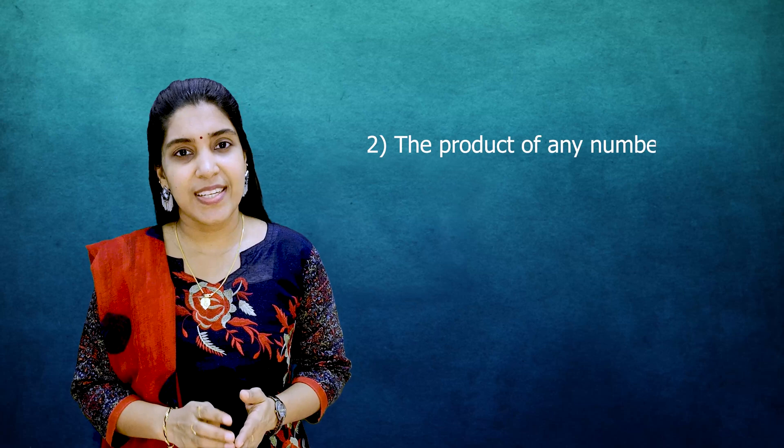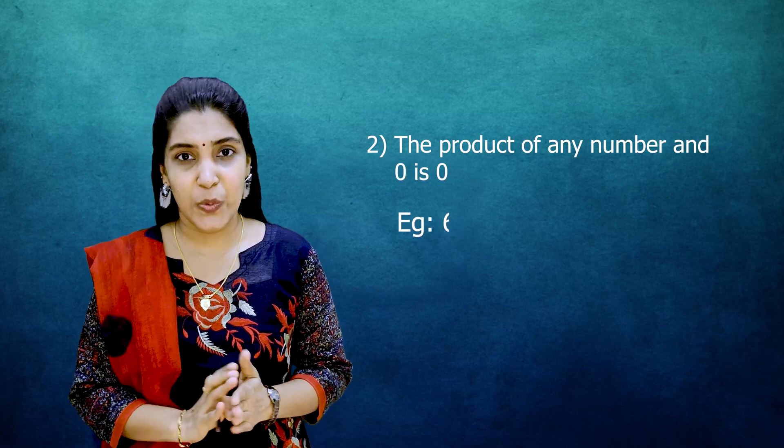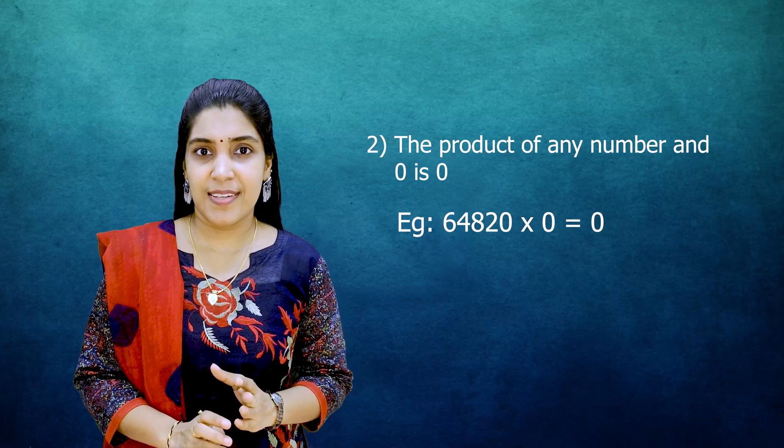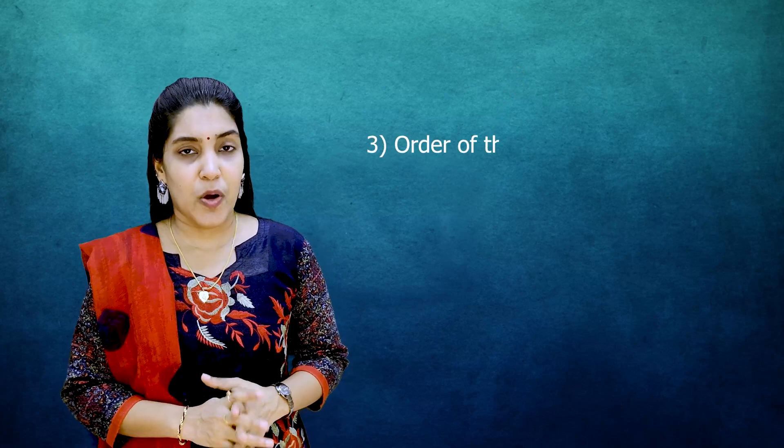And the second property: any number if you are multiplying with 0, the result will be 0. This we already discussed in another video that you can also check out. Here is the card for the video.